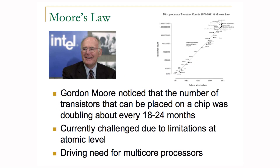Moore's Law is something that Gordon Moore, one of the co-founders of Intel, noticed several decades ago in the 60s: every 18 to 24 months, the number of transistors on a chip was doubling. This is currently a challenge due to limitations at the atomic level, and we can see this in the need to put multiple processor cores on chips — multiple cores that you may find in some newer computers.